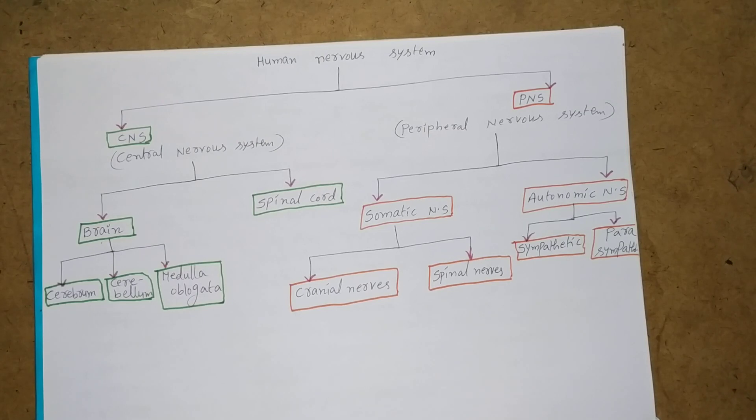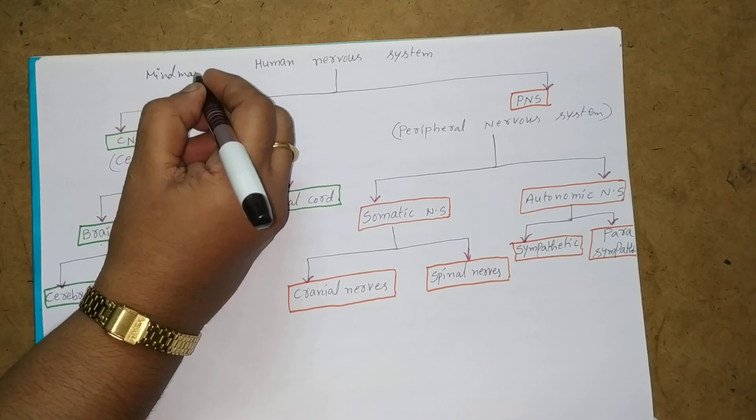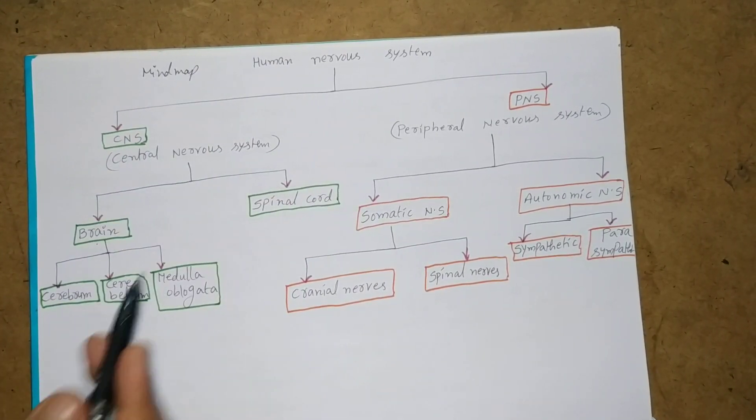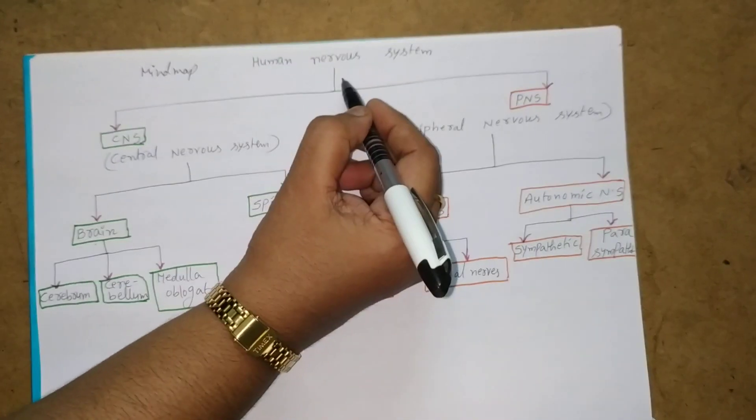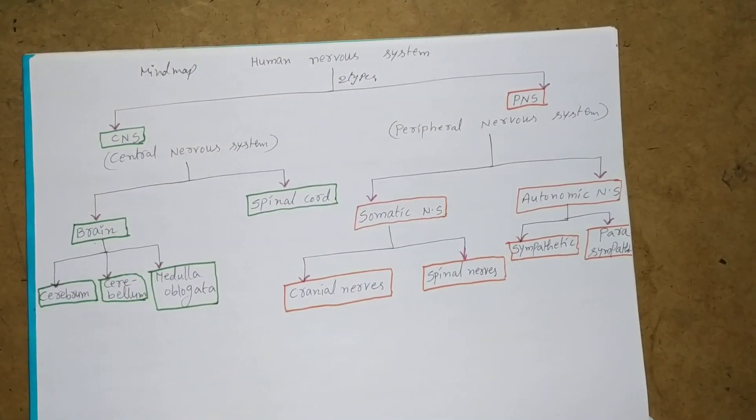We will discuss how to draw a mind map of the human nervous system. There are two types of nervous system.